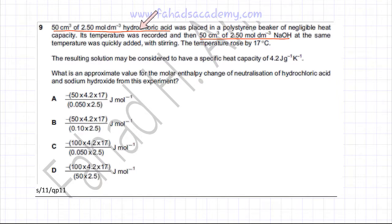So he's adding hydrochloric acid and he's mixing NaOH into that hydrochloric acid and he's saying that the temperature rose by 17 degrees centigrade. So we have the change in temperature, delta T.